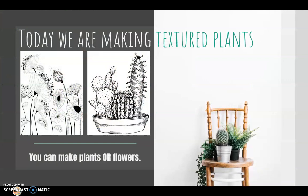Now, for our actual project — today we're making textured plants. You can decide if you want to make plants in a pot, like a flower pot with all different plants in it, or just flowers. I've given you a picture of two examples. The first example is of the flowers, and you can see there are different textures inside each of the flower heads. Sometimes the stems have a little bit of texture too.